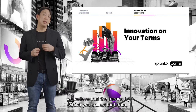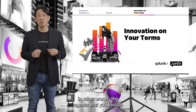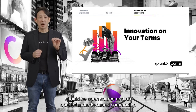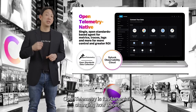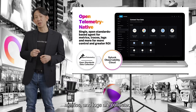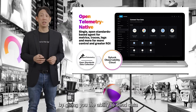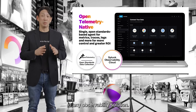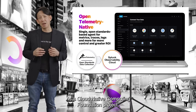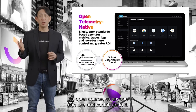At Splunk, we believe that the means by which you collect data — the agents you install — should be open source and open standards-based commodity. Open telemetry is fundamentally changing how traces, metrics, and logs are collected. It's opening up a whole new world of possibilities by giving you the ability to send data to any observability solution. As a Cloud Native Computing Foundation project, it's open source, so anyone can use and contribute to it.